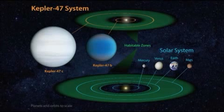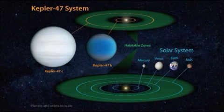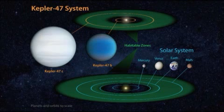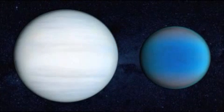While not a world thought to be hospitable for life, Kepler-47c is the first known circumbinary planet found in the habitable zone of its stars, and it demonstrates the diversity of planetary systems in our galaxy.